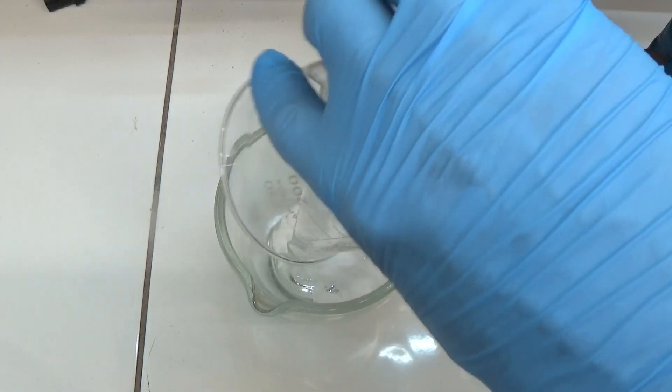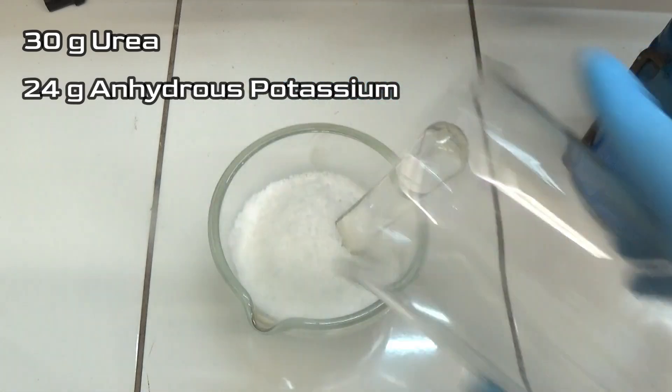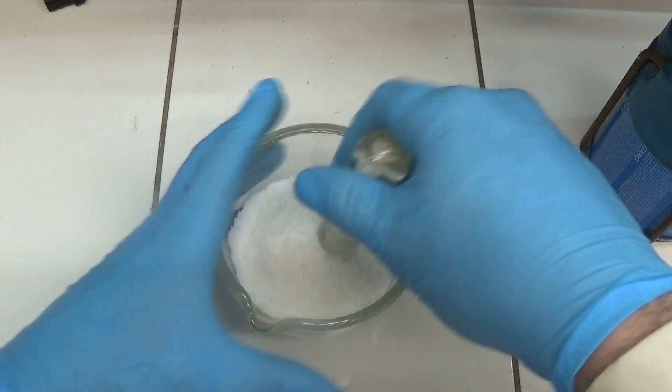To prepare the cyanate, we put 30 grams of urea and 24 grams of anhydrous potassium carbonate in a mortar. Crush and mix the solids well.